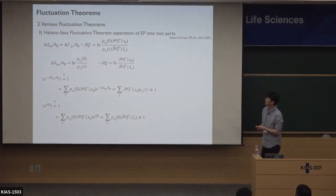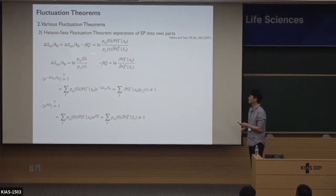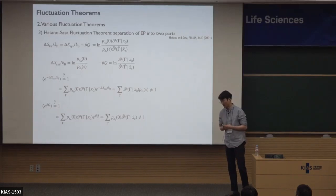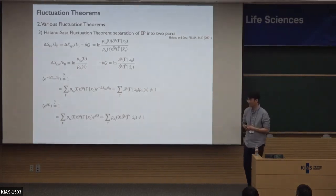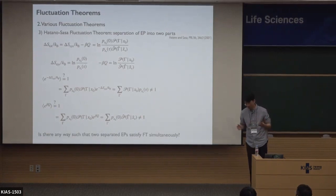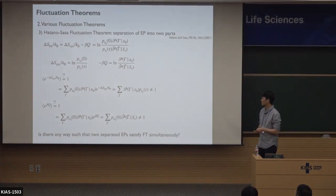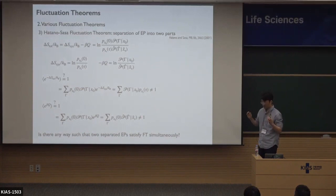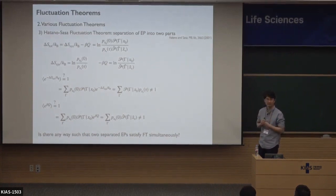So this natural separation does not work — if these two entropy productions do not satisfy the fluctuation theorem separately, the next question becomes: is there any clever way such that two separated entropy productions both satisfy the fluctuation theorem simultaneously? There is a way. Hatano and Sasa found it.